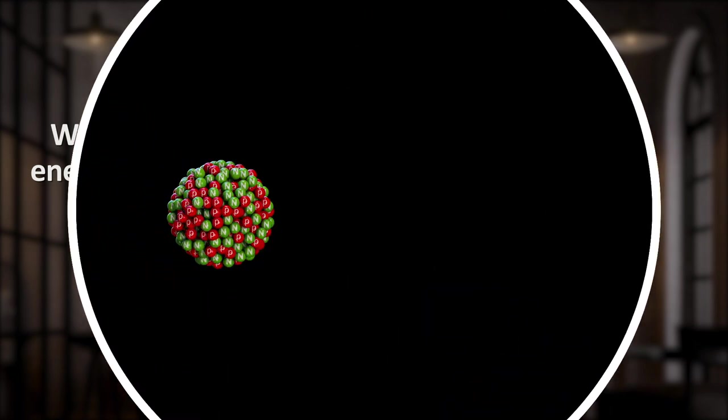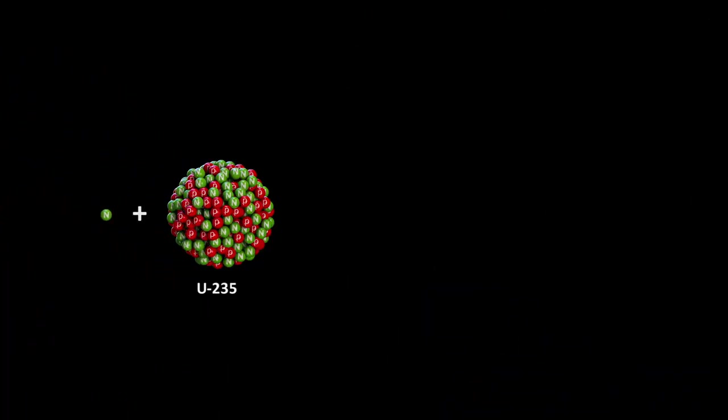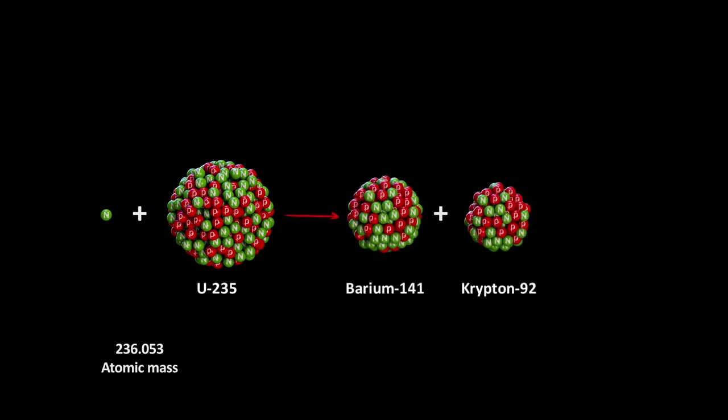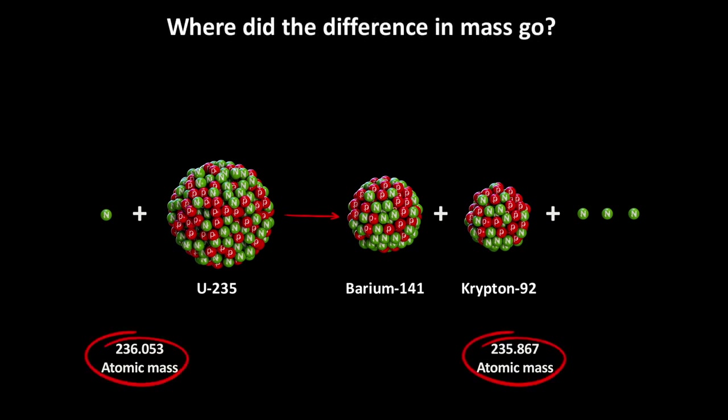Where does this energy come from? Well, if we consider the mass of uranium-235 plus one neutron that hits it, we get 236.053 unified atomic mass units. But now if we add up the mass on the right side of the equation, the barium-141, krypton-92, and three neutrons, we get an atomic mass of only 235.867. Where did the difference in the mass go? The mass went exactly into Einstein's equation. It became energy.